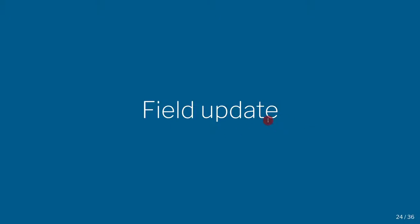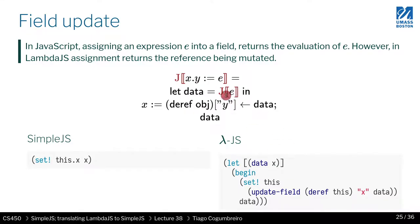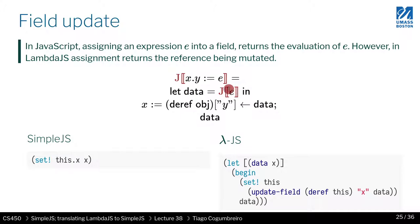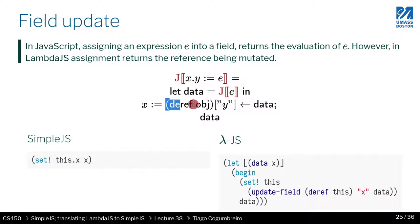Next, let's look at field update. For field update, what we need to do first is translate the expression in the body and store that in a variable. We're going to generate a let binder that holds the result of that translation. Then we generate the code for the assignment: to do the assignment, we need to first obtain the object x and then obtain field y.